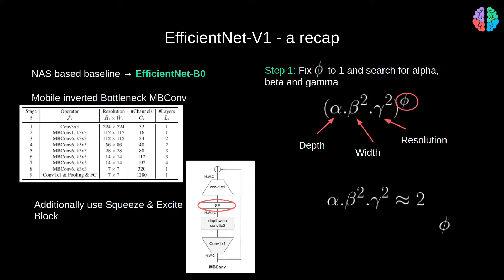Now, the training itself takes place in two stages. In stage 1, we fix phi to 1 and calculate the best value for alpha, beta, and gamma using grid search. The result of this search gives the best values, which seems to be 1.2, 1.1, and 1.15. The model that we arrive at in this step is the EfficientNet B0 model.